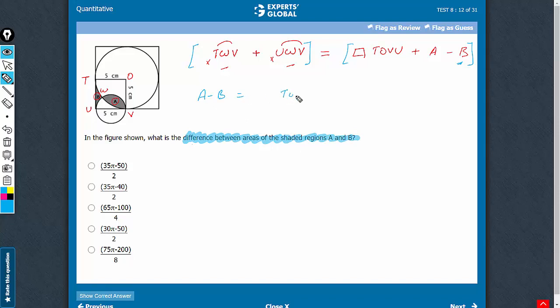A minus B is going to be area of this sector plus area of this sector minus the area of this square T, O, V, U.